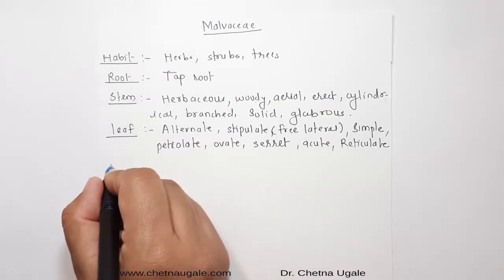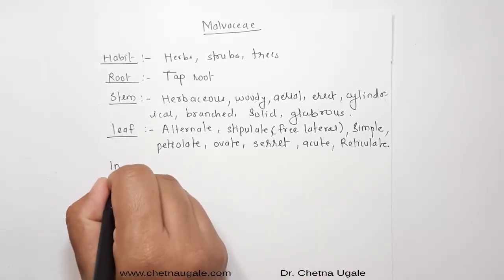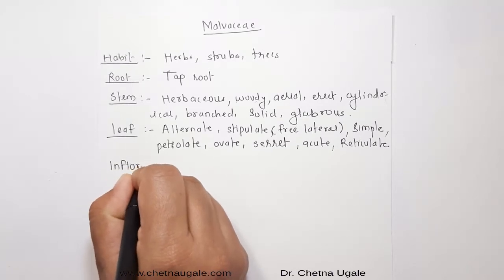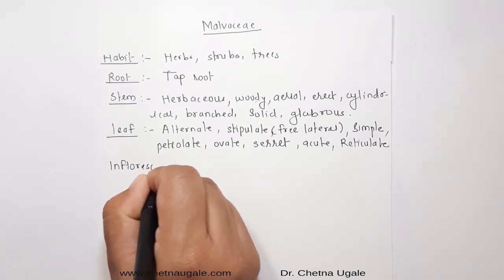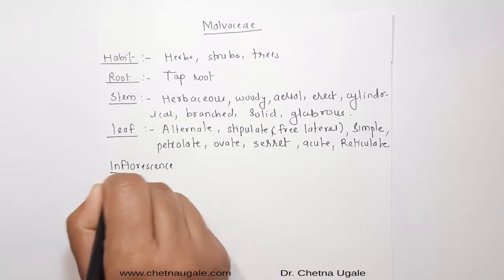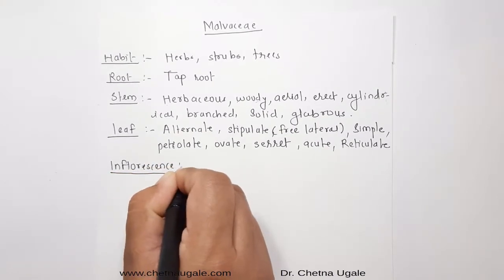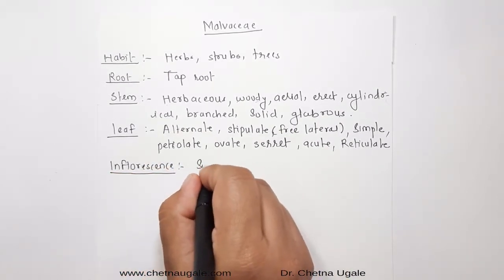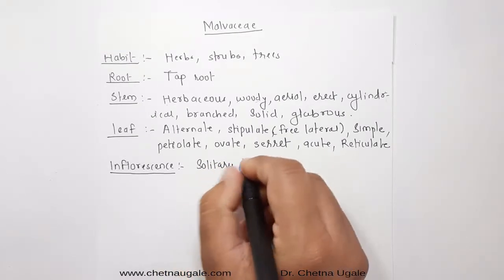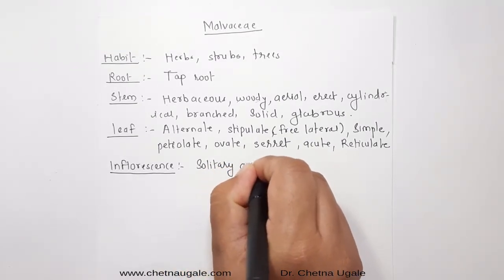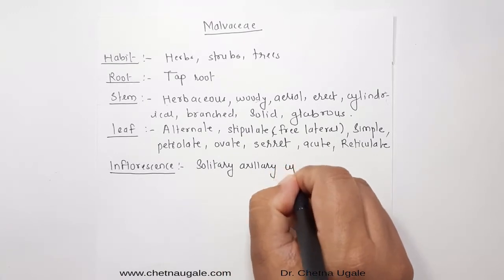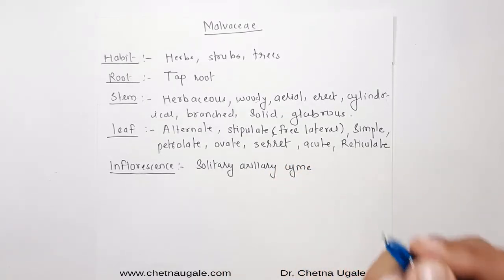The inflorescence of the Malvesi family is typically cymose type, and most of the time it is represented by solitary axillary or solitary axillary terminal.